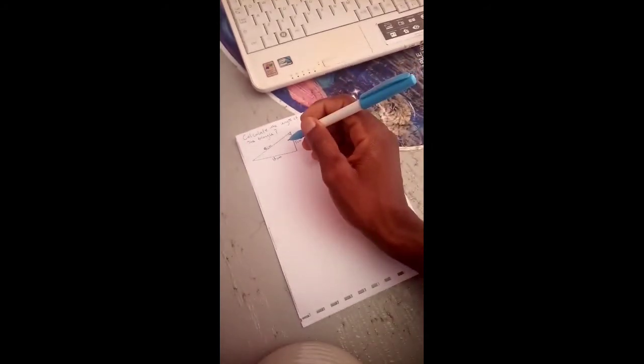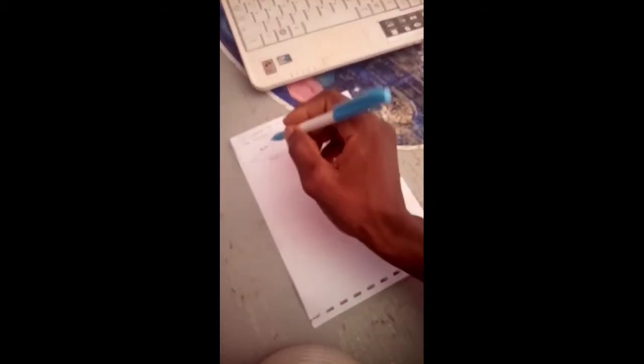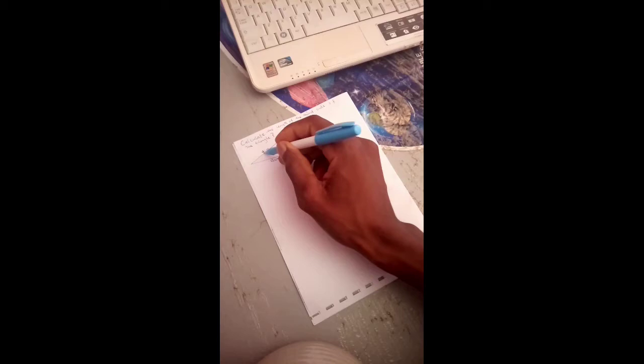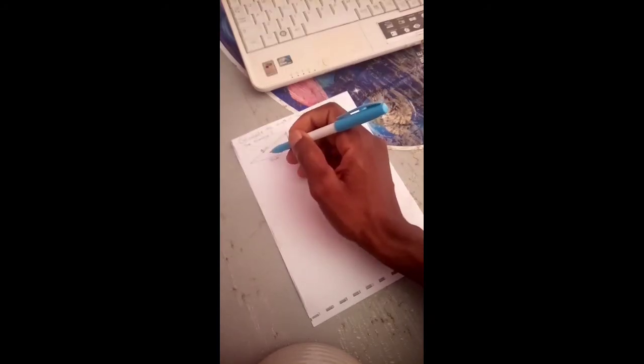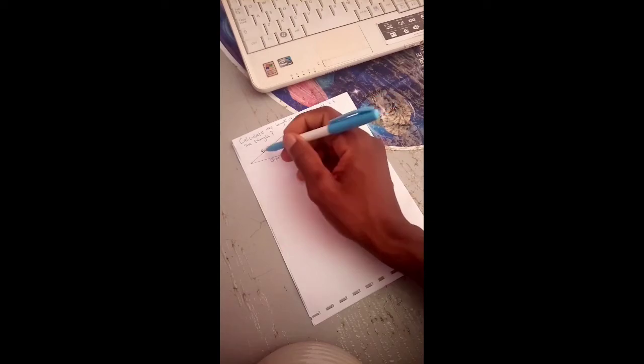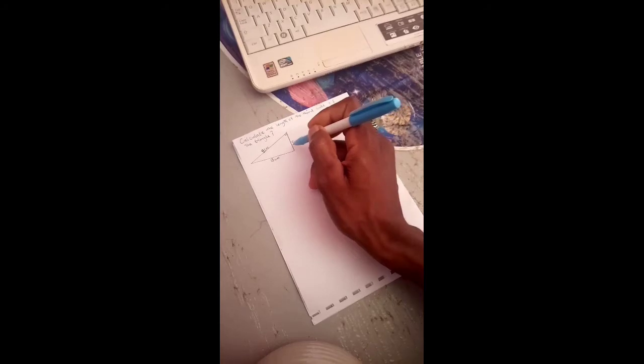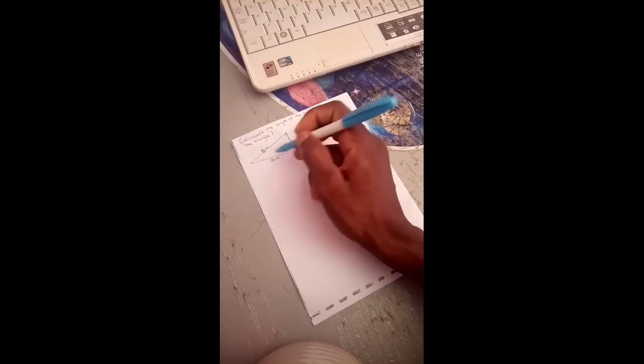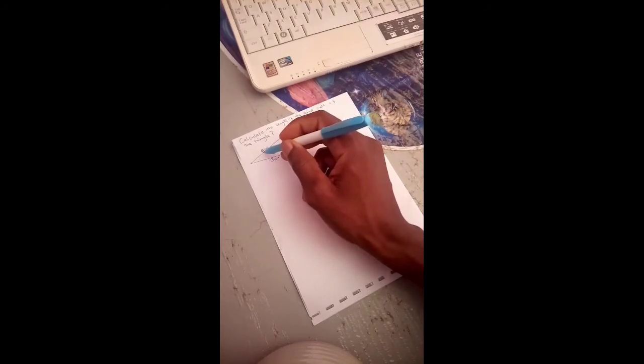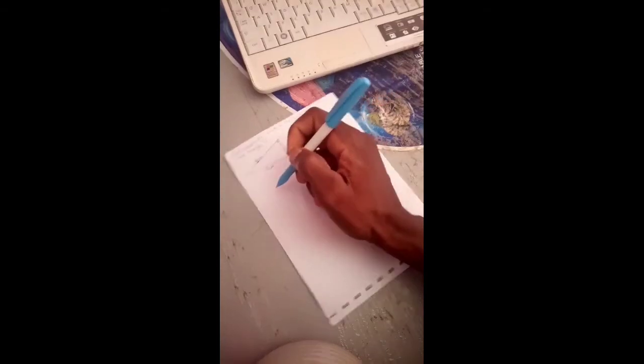We are asked to find a centimeters, this length, by using our Pythagoras rules. So here is a centimeters, here is 13 centimeters, here is 5 centimeters. We are asked to find a centimeters.